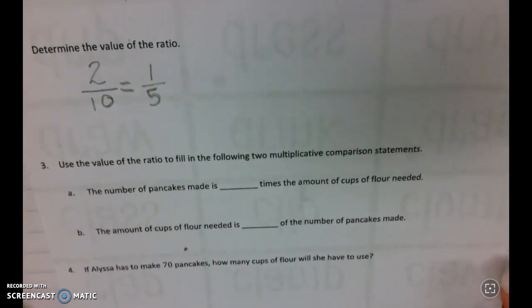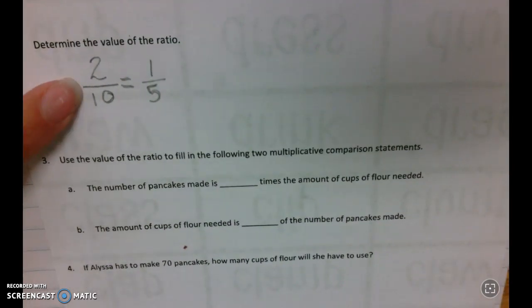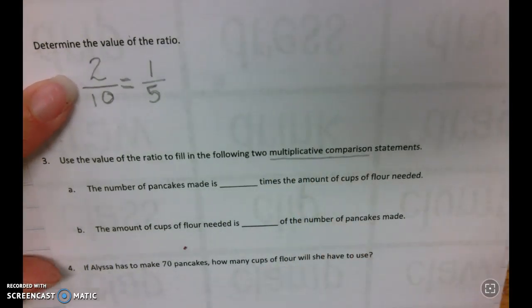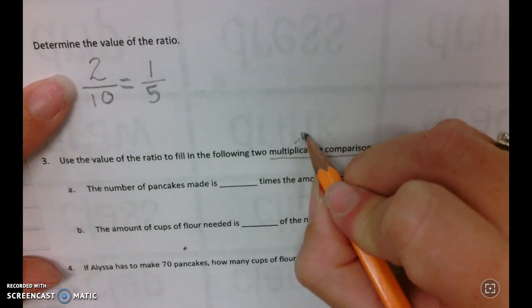In number three, they say use the value of the ratio to fill in the following two multiplicative comparison statements, and that just means multiplication.